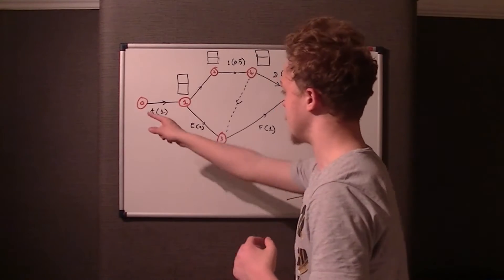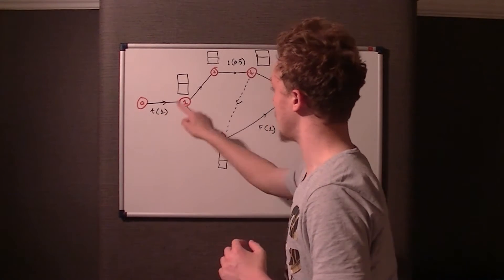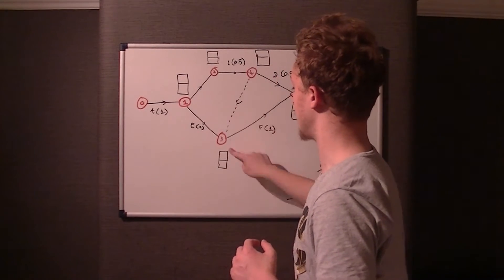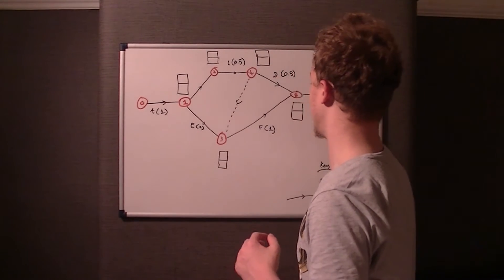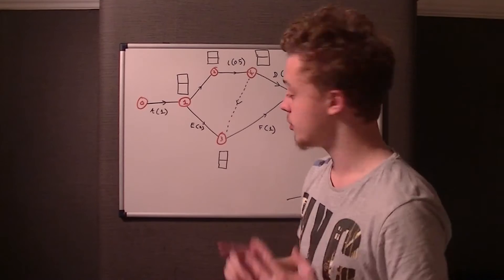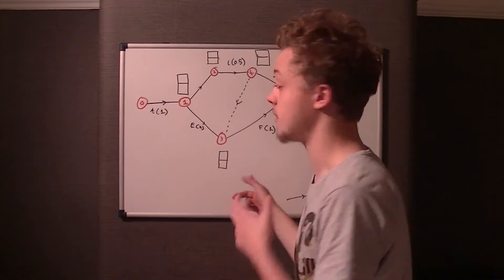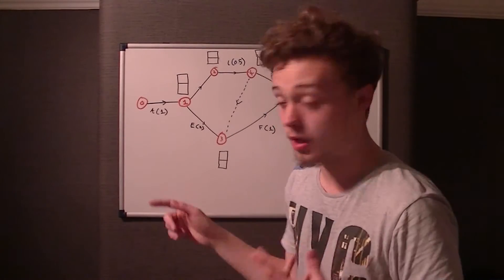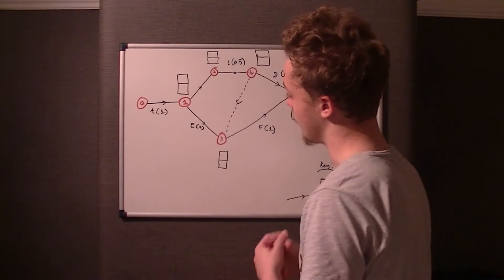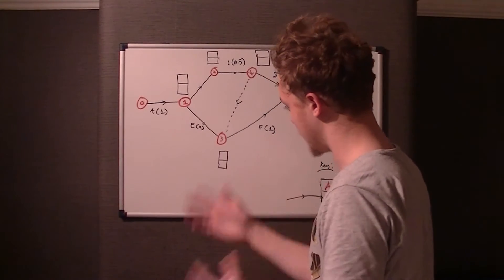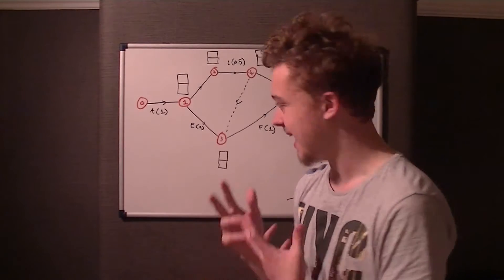We've got circles labelled 0, 1, 2, 3, 4, 5, 6, and also associated with each arc we've got a letter with a number.